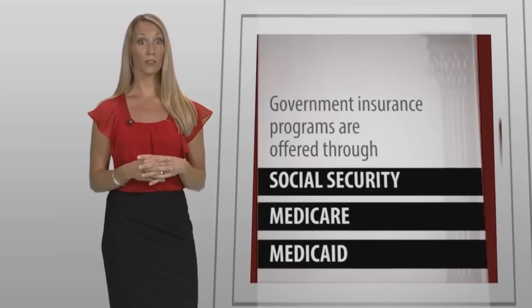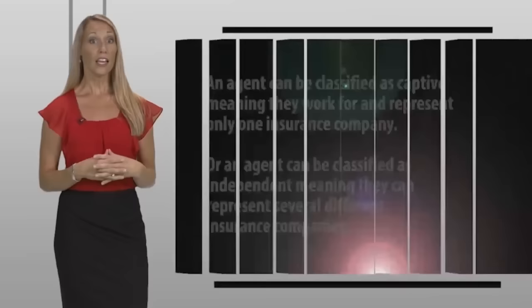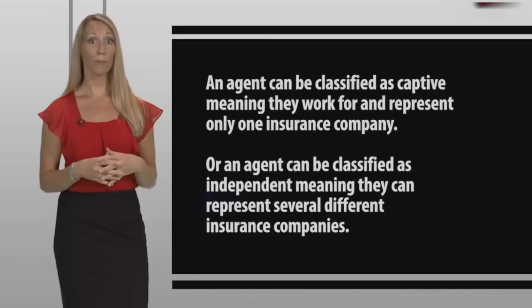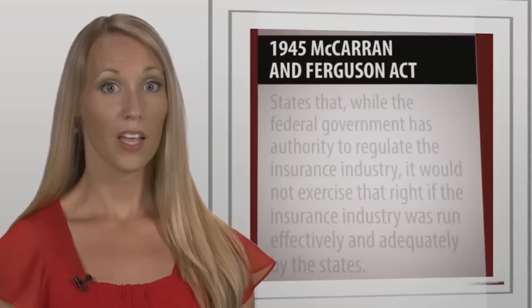Government insurance programs are offered through Social Security, Medicare, and Medicaid. Most consumers purchase insurance from licensed insurance producers. Insurance producers may be agents who represent a specific company, or brokers who represent several companies. An agent can be classified as captive, meaning they work for and represent only one insurance company, or independent, meaning they can represent several different insurance companies.